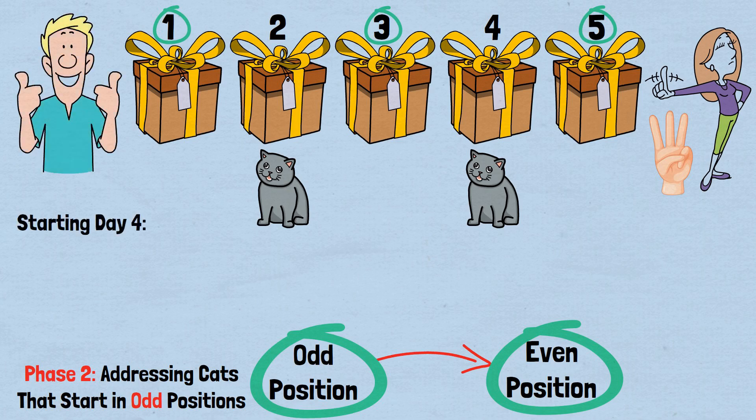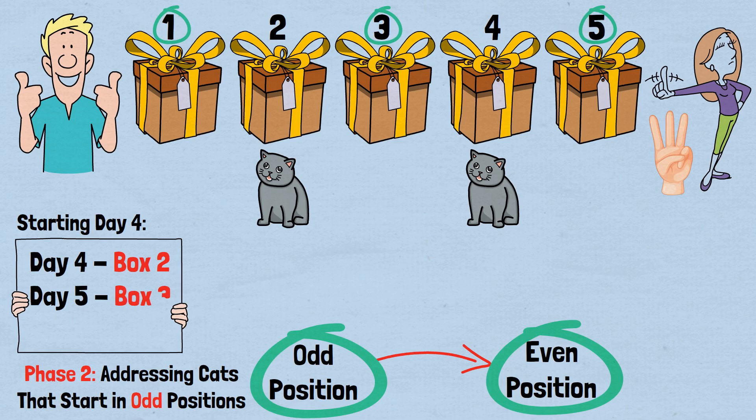Day 4: Box 2. Day 5: Box 3. Day 6: Box 4. This will catch the cat that started in an odd position, now guaranteed to be in an even position.